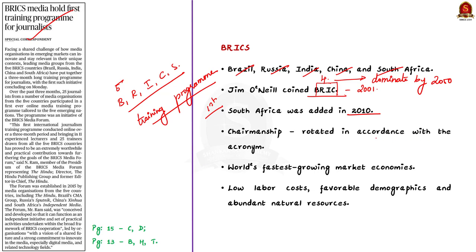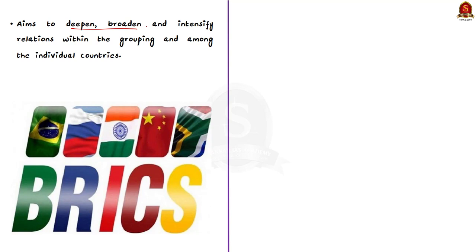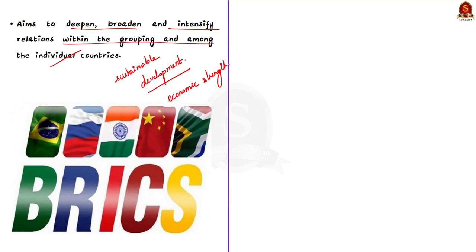The chairmanship of the forum is rotated annually among the members in accordance with the acronym BRICS — after Brazil, Russia will take chairmanship, then India, then China, then South Africa. The BRICS countries ranked among the world's fastest growing market economies for years because of low labor cost, favorable demographics and abundant natural resources at the time of a global commodities boom. BRICS aims to deepen, broaden and intensify the relations within the grouping and among the individual countries for more sustainable, equitable and mutually beneficial development. This approach takes into consideration each member's growth, development and poverty objectives, ensuring relations are built on respective countries' economic strengths and avoid competition wherever possible.